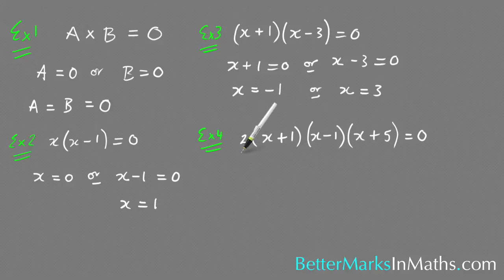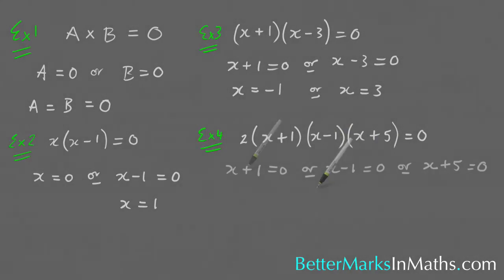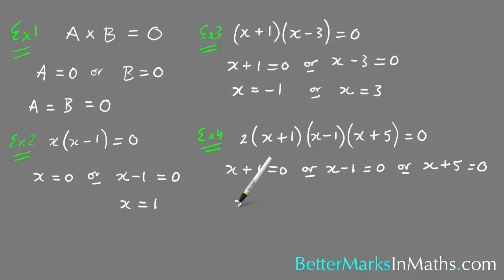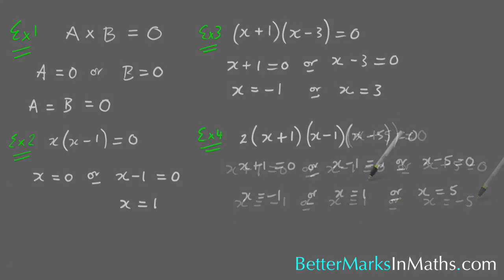Example 4 is a cubic function with a number out the front: 2(x plus 1)(x minus 1)(x plus 5) equals 0. The number 2 always equals 2, so it will never equal 0, meaning you just ignore it and work with the brackets. Either x plus 1 equals 0, or x minus 1 equals 0, or x plus 5 equals 0. Solving each gives x equals minus 1, x equals 1, or x equals minus 5.